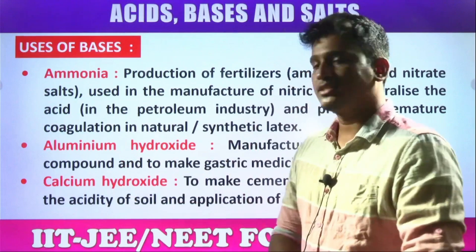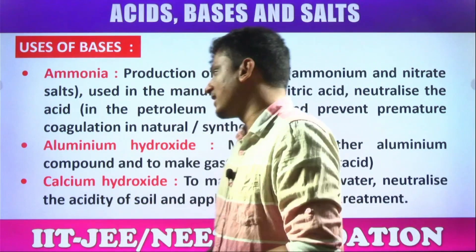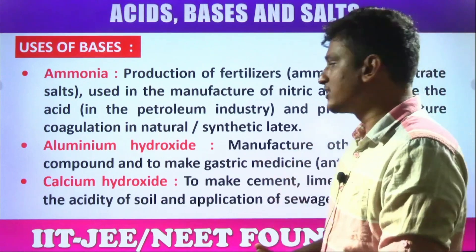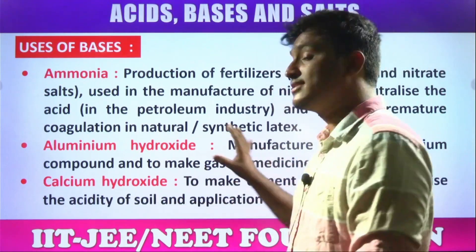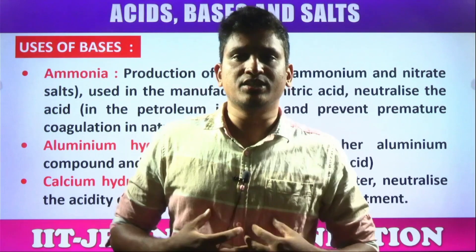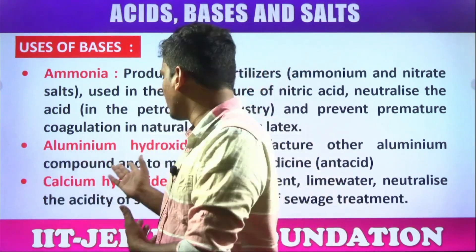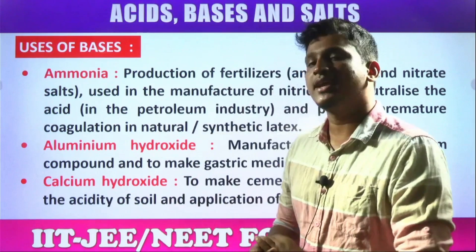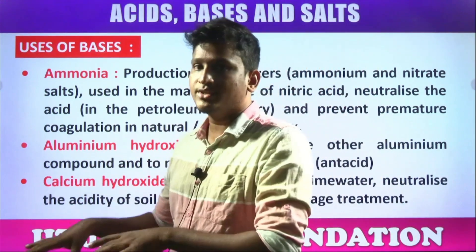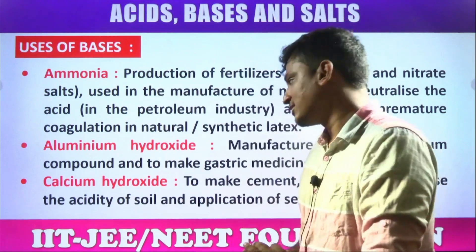Aluminium hydroxide Al(OH)₃: used in the manufacturing of other aluminium compounds and to make gastric medicines and antacid tablets. If you feel indigestion or gastric problems, aluminium hydroxide is used. Mainly antacid tablets are made of magnesium hydroxide, but aluminium hydroxide is also used in their preparation.